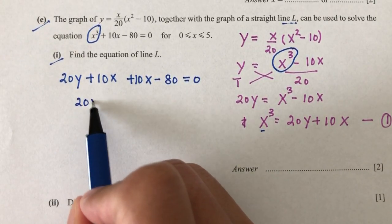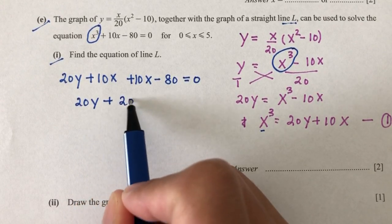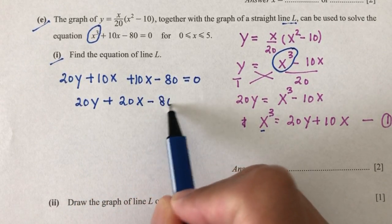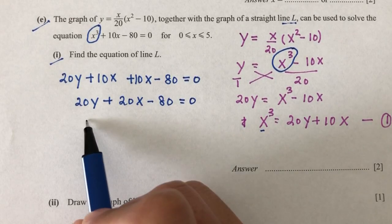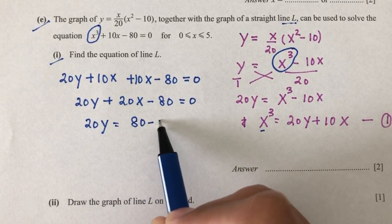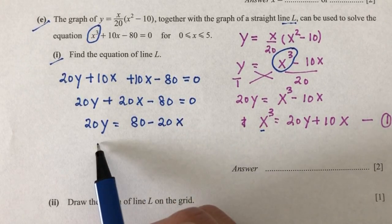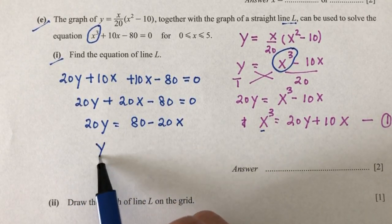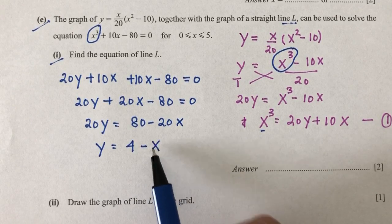Now, 20y plus 20x minus 80 is equal to 0. So 20y is equal to 80 minus 20x. So divide by 20 everywhere, you will have y equal to 4 minus x.